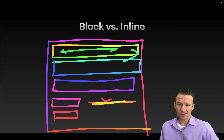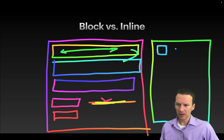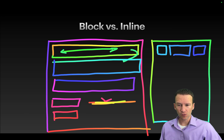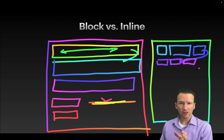The opposite of block is inline. If a tag is an inline tag, they will all lay out in the same line. Regardless of width, they're all going to go in the same line until you run out of horizontal space in the viewport, then it will wrap down to the next line. That's the fundamental concept of block versus inline.